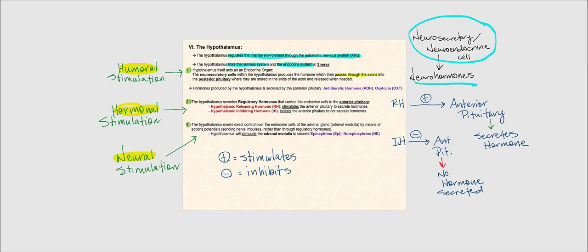These neurohormones will not be secreted into a synaptic cleft — they will end up in blood. The neurosecretory cells are found within the hypothalamus and produce hormones that pass through axons leading into the posterior pituitary gland. At the pituitary gland, we find the terminal ends of these axons where the hormones produced by the neurosecretory cells are stored and released when needed.